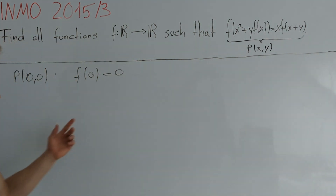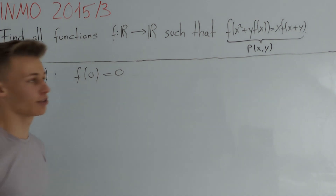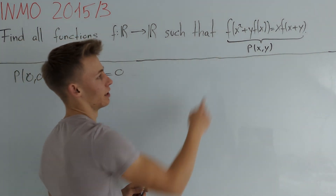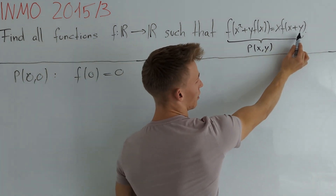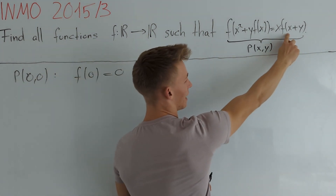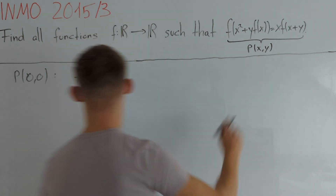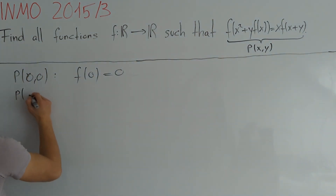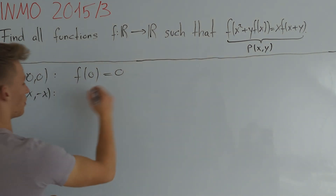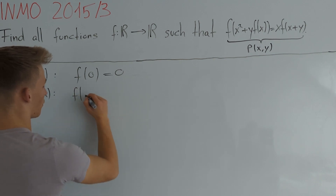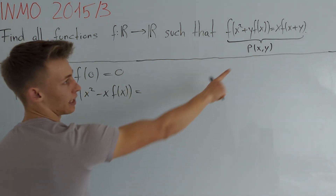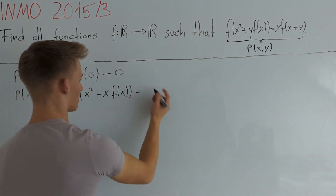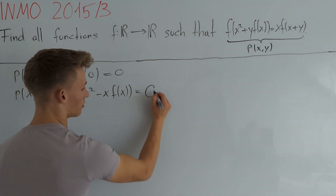Therefore we know the value of the function at 0, so it's a good idea to make one of these arguments equal to 0. Our idea is to plug in y equals minus x, because then we have x minus x which equals 0. So p(x, -x) yields that f(x² - x·f(x)) = x·f(0), and since f(0)=0, this is also equal to 0.